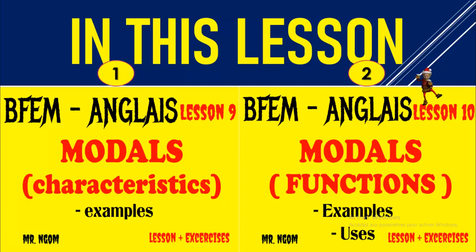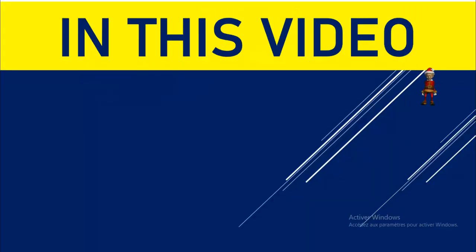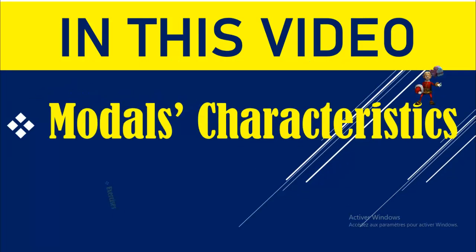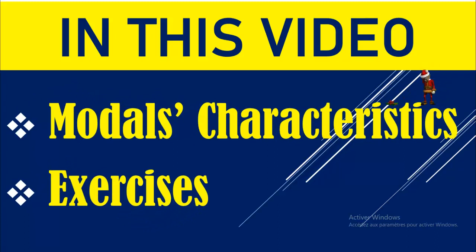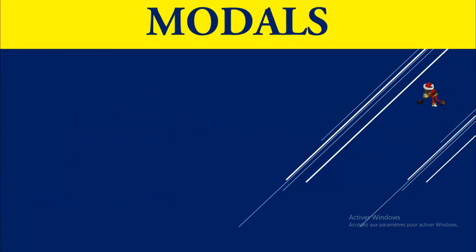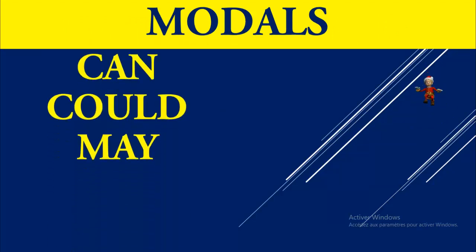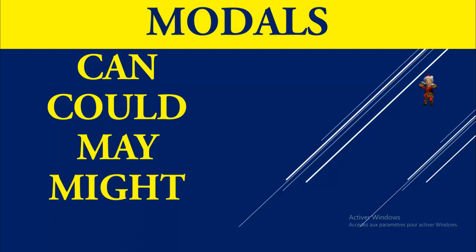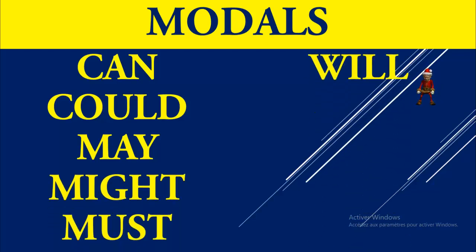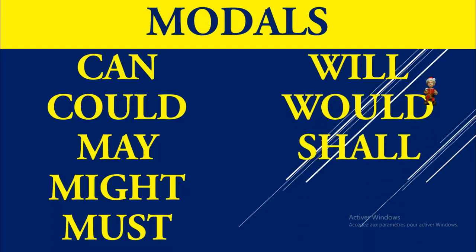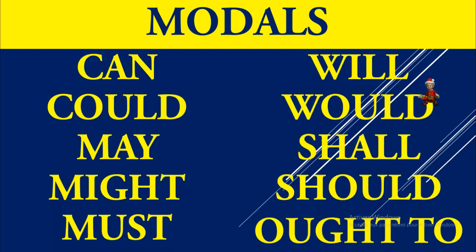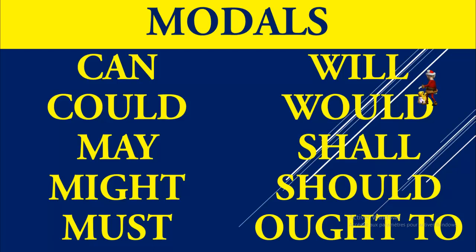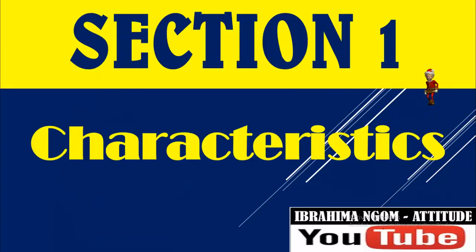In this video number one: modals, characteristics and exercises. First of all, here are examples of modals: can, could, may, might, must, will, would, shall, should, ought to — among others need, have to. In this section we will see the characteristics of modals.